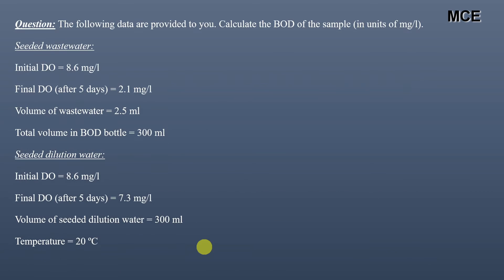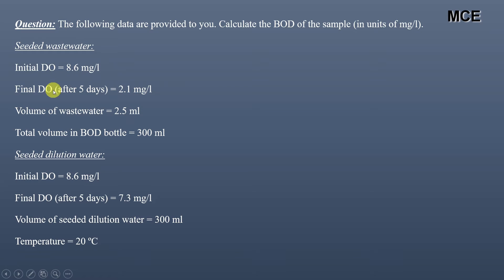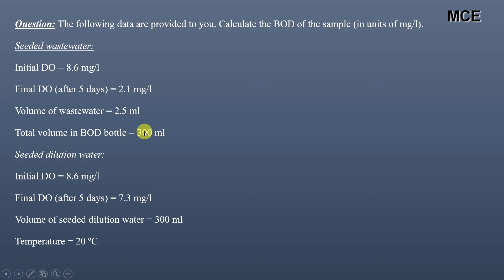The following data are provided and we have to find the BOD of this sample in mg/L. For the seeded waste water: the initial DO is 8.6 mg/L, and the final DO after 5 days incubation is 2.1 mg/L. Volume of waste water is 2.5 mL and total volume in the bottle is 300 mL.